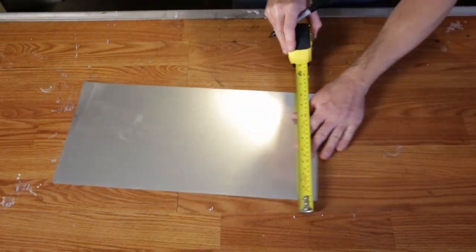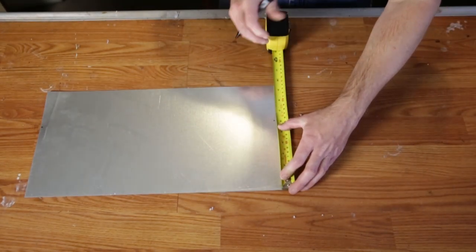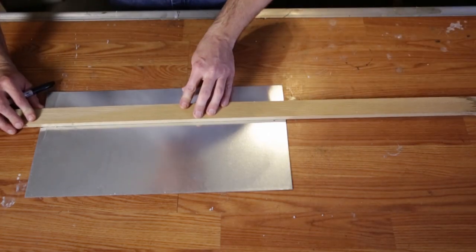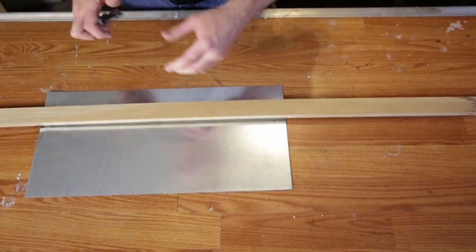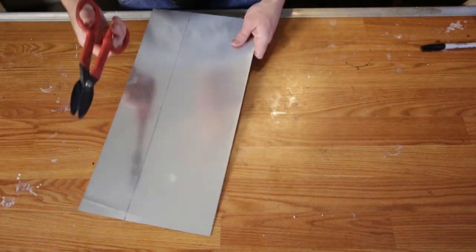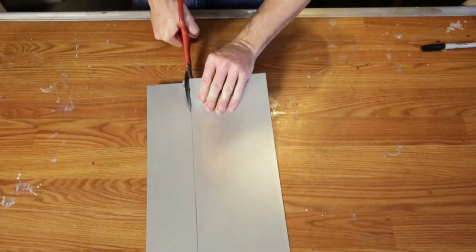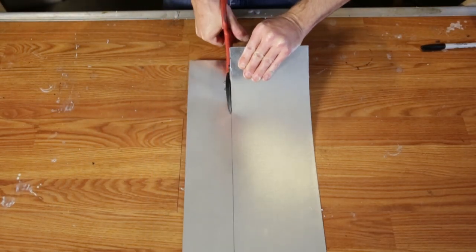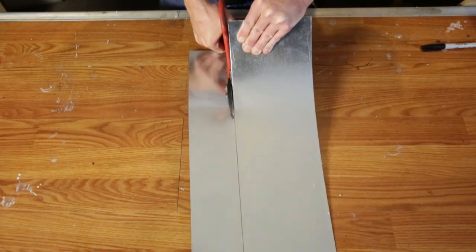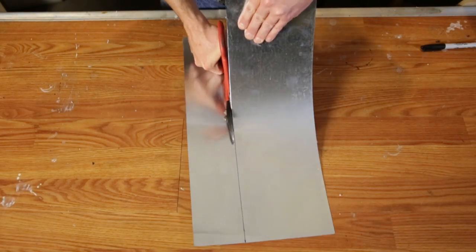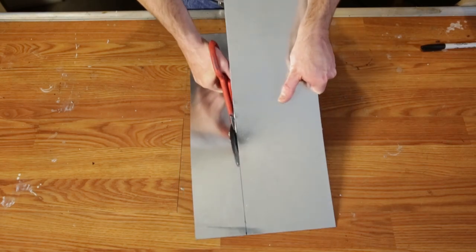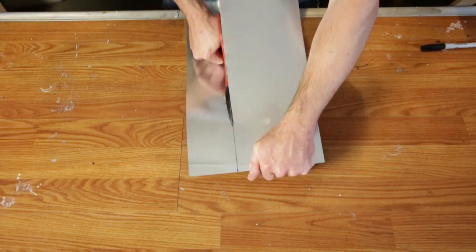Now we can cut our panel to size. This panel is already 19 inches long, so I'm just going to cut it along the six-inch side using a straight edge and tin snips. This galvanized steel is a little thick—it's 24 gauge—so my tin snips are having a hard time. The ideal thickness here is about 28 to 32 gauge, which makes it much easier to cut.